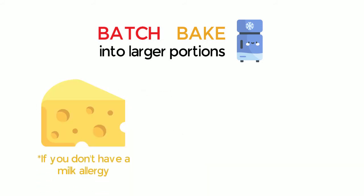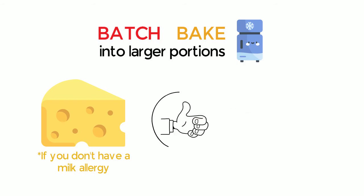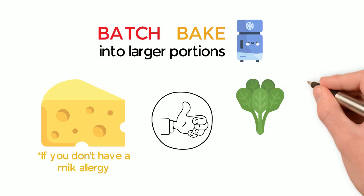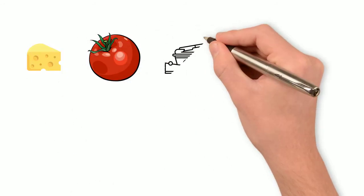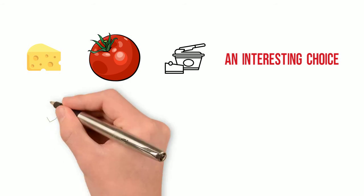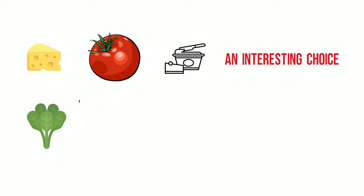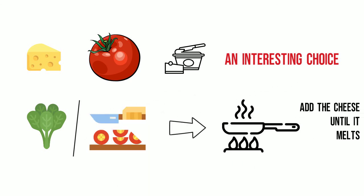Cheese is another ingredient that, if you don't have a milk allergy, can be versatile when it comes to spicing up breakfast. For example, spinach or zucchini and cream cheese alone, with or without the keto sausage. Similarly, if you warm chopped tomatoes in cream cheese, that can be an interesting choice. The way I work these is to put the spinach or the tomatoes in the pan, warm them, and then add the cheese until it melts.